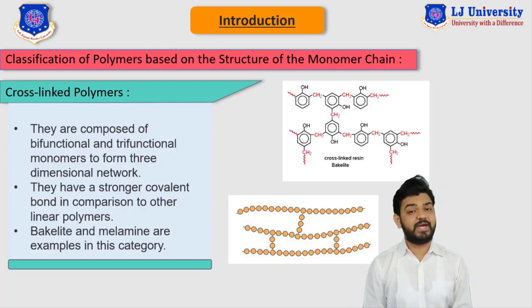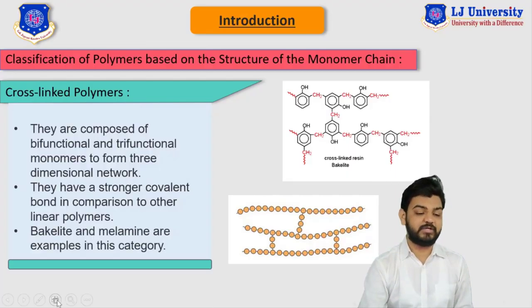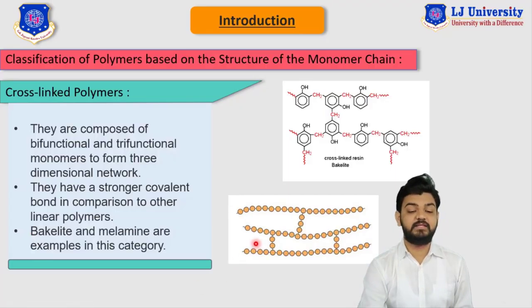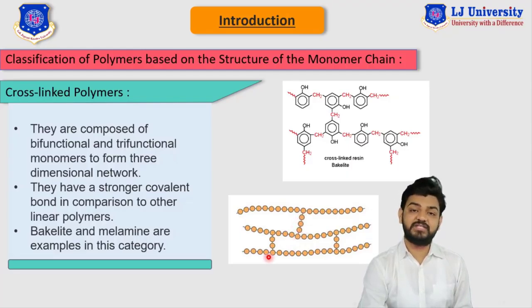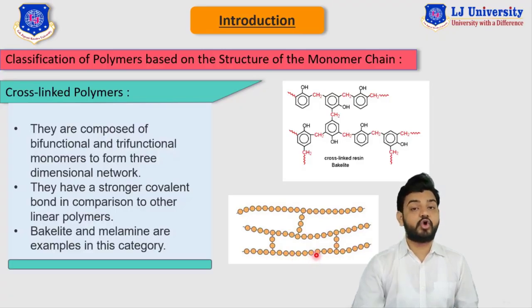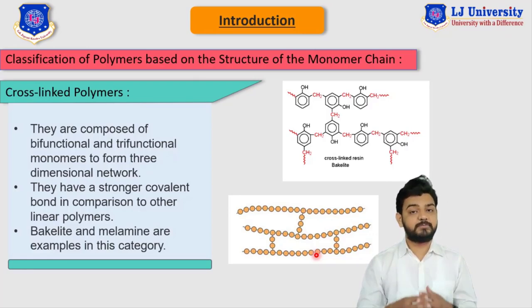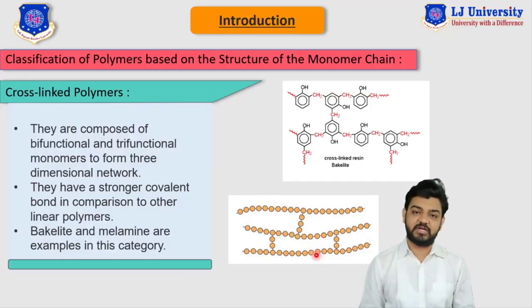Here in this image, you can see the cross-linked polymers. Let me take a pointer to explain the concept of cross-linking. Here you can see that this is the straight line of the linear polymer and this is a branch of it. But this branch is attached to another straight line or linear polymer — so we can say that this is the cross-linked polymer. They are linked with another chain of the polymer in a crossed manner, forming a complex three-dimensional network.